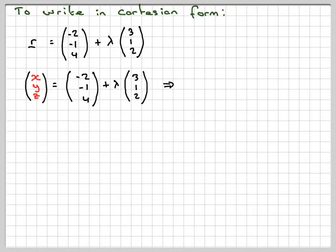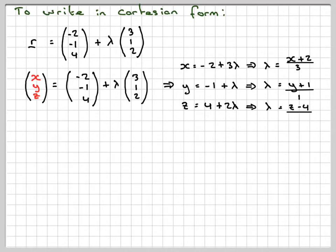For the X component, X will be equal to -2 + 3λ. We can make lambda the subject: λ = (X + 2)/3. For the Y component, Y will be equal to -1 + λ, and therefore λ = (Y + 1)/1. I'm going to put the 1 underneath—it's not necessary, but we'll put it in for the moment. And Z will be 4 + 2λ, which gives λ = (Z - 4)/2.